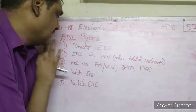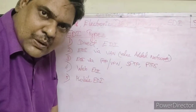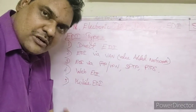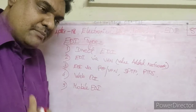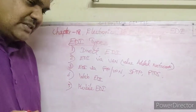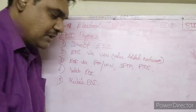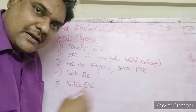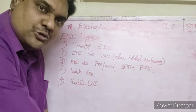Next, EDI via VAN. VAN stands for Value Added Network. Setting up a local network can be costly. Big companies can afford it, but some small businesses cannot establish their own network. So what they will do is use third-party networks — Value Added Networks.